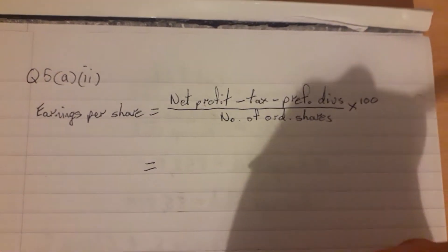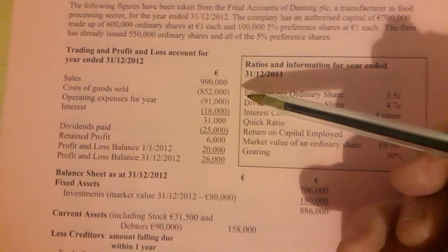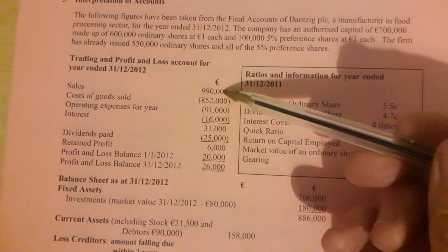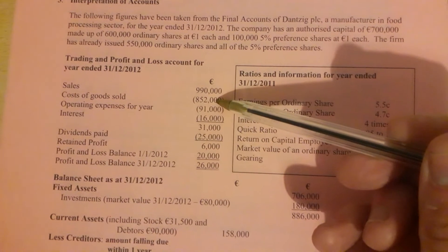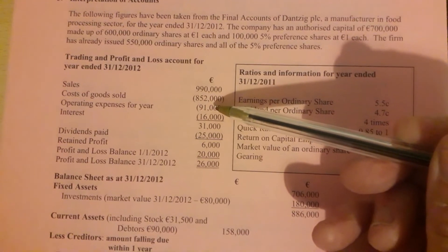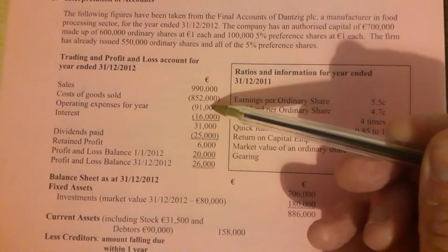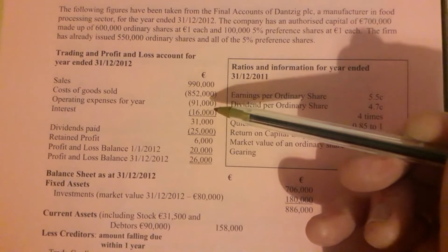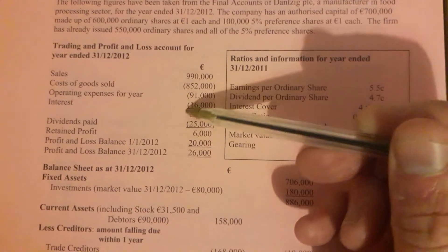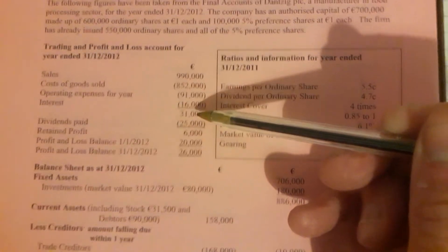So earnings per share - let's start substituting. Net profit: if we look over here, we're going to have to do some calculations. Sales less cost of goods sold gives us gross profit. If we took the operating expenses first, we would get our operating profit, and then if we subtracted the interest, we get our net profit. So our net profit here is 31,000.